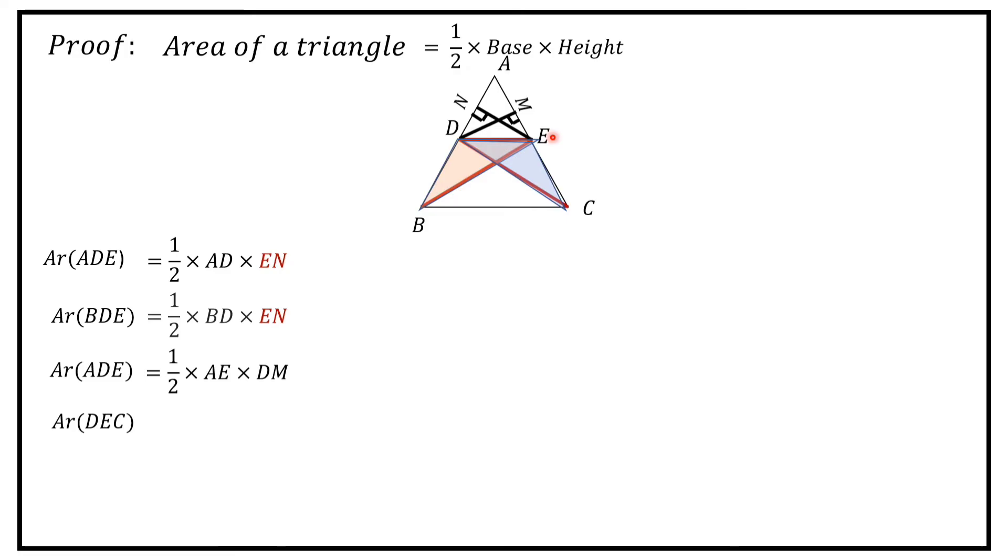Now, area of triangle DEC is equal to half into base EC into perpendicular height DM.